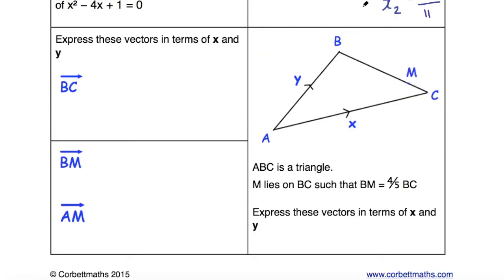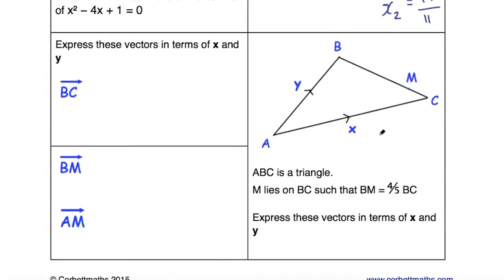The last question gives us a triangle and it says: ABC is a triangle, M lies on BC such that BM = 4/5 BC. Express these vectors in terms of x and y.